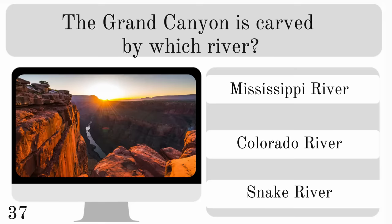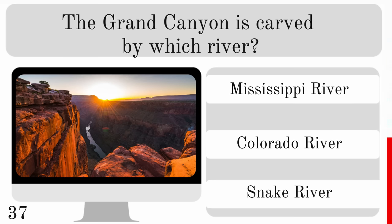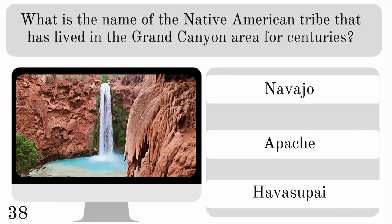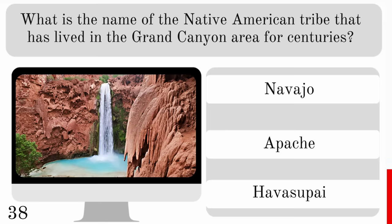The Grand Canyon is carved by which river — the Mississippi, Colorado or Snake River? The answer is the Colorado River. So what is the name of the Native American tribe that has lived in the Grand Canyon area for centuries — Navajo, Apache or Havasupai? The answer is the Havasupai.